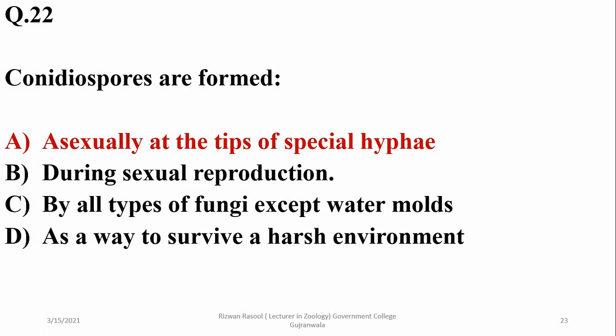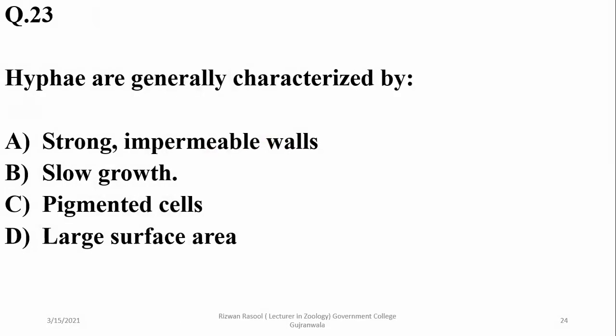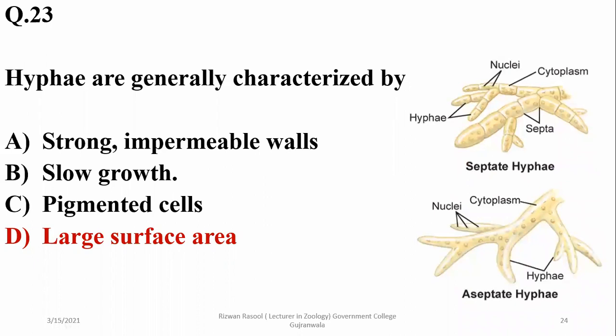Hyphae are generally characterized by large surface area, they have permeable walls but they're strong, they show rapid growth usually, and they have pigmentation as well. So D is the right option—they do not have pigmentation, but they are known to have large surface area for absorption.